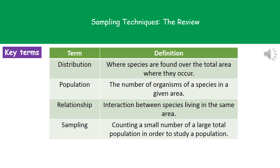When considering sampling, there are four key terms we need to understand. First is distribution — where the species is actually found over the total area in which they occur. Population refers to the number of a particular organism in a given area. Relationships are the interactions between species living in the same area. Finally, sampling refers to counting a small number of a large total population to study it without counting every single individual.